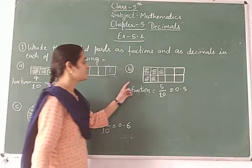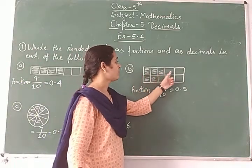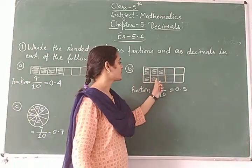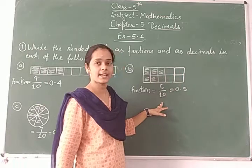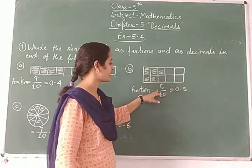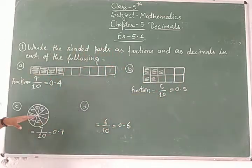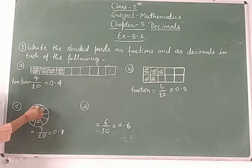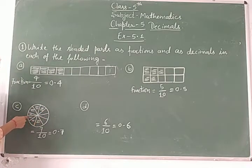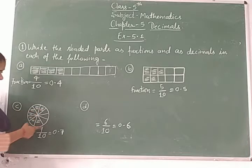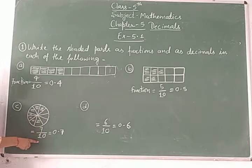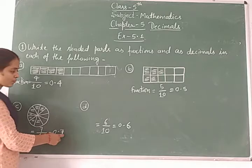Question number three: count the parts — one through ten, total ten parts. And five are colored, so that is five upon ten, which equals zero point five — 0.5. Here, total ten parts again. Count them: three are colored, so seven are colored — seven by ten equals zero point seven — 0.7.